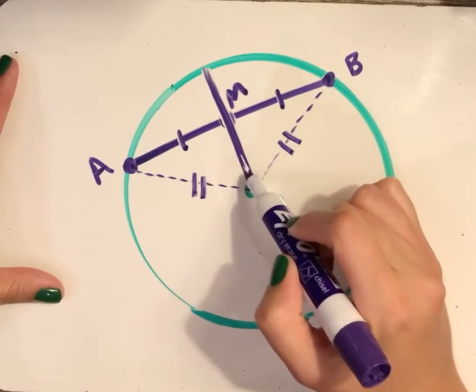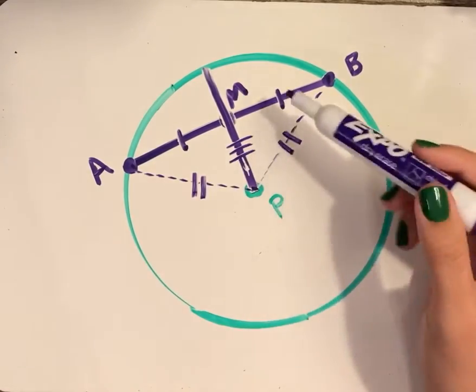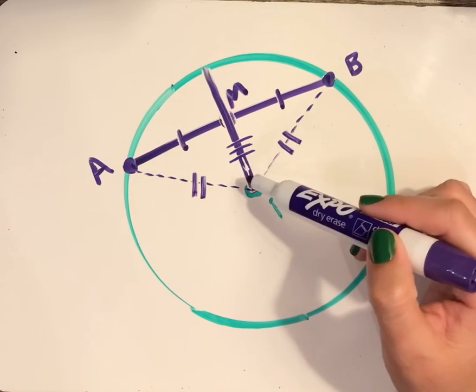Finally, this little segment here, MP, shows reflexive property. It's being shared by both triangles, so MP is congruent to itself.